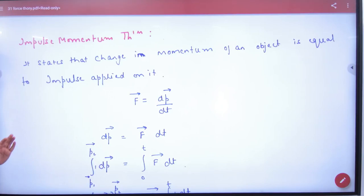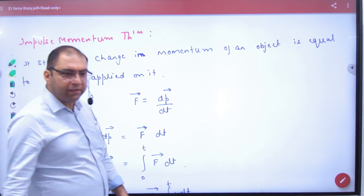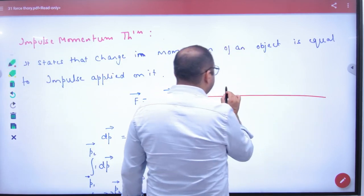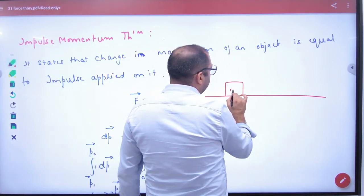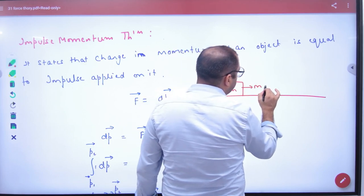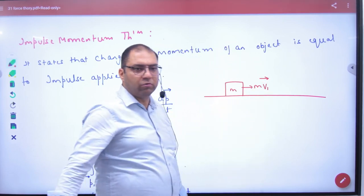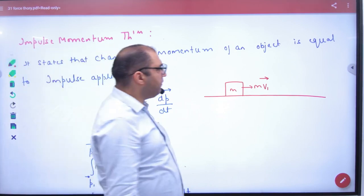Impulse Momentum Theorem. According to this theorem, suppose you have a body whose initial momentum is mv1 vector. Remember, the velocity is mv1 vector.